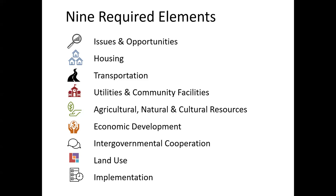A lot of communities are currently updating their plans, and many are trying to do it on their own without a lot of financial resources. I've been encouraging communities to think critically about how they want to use their plan and what the most important elements are, and to really focus their update efforts on that. I've also been seeing communities that are active with planning where they're adding in additional elements — maybe sustainability, public health, or aging — either as a separate element or as a thread throughout their plan. The planning law really provides a framework, but how you craft the plan is up to you and your local community.